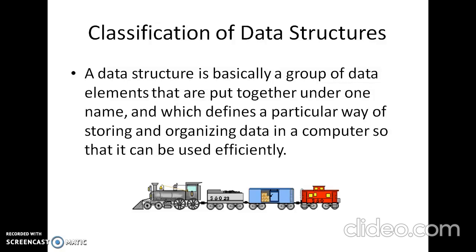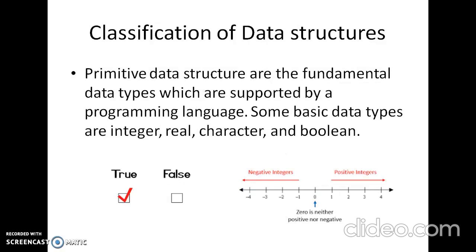While one type of data structure may permit adding a new data item only at the beginning, the other may allow it to be added at any position. While one data structure may allow accessing data items sequentially, the other may allow random access of data. The selection of an appropriate data structure for the problem is a crucial decision and may have a major impact on the performance of the program. The data structures are generally categorized into two classes: primitive and non-primitive data structures.